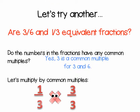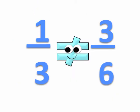Now, let's multiply one-third by the common multiple of three over three. We get three-ninths. In this case, one-third and three-sixths are not equivalent fractions.